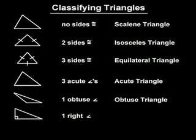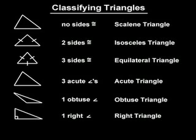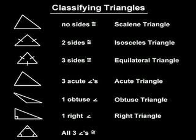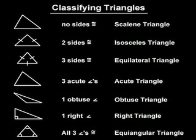A triangle that has one right angle is called a right triangle. And a triangle that has all three angles congruent is called an equiangular triangle.